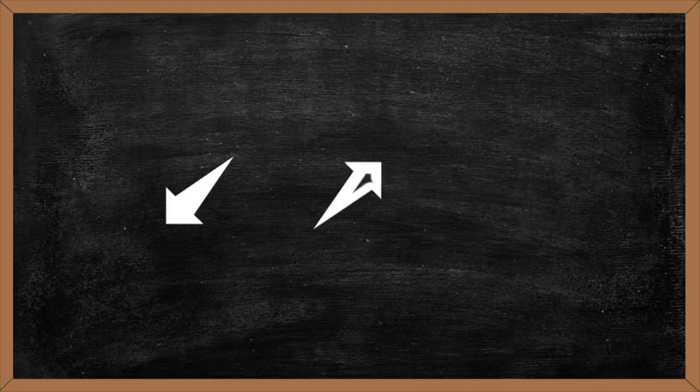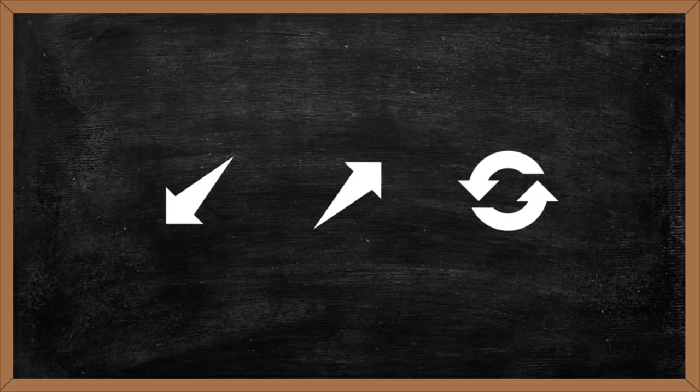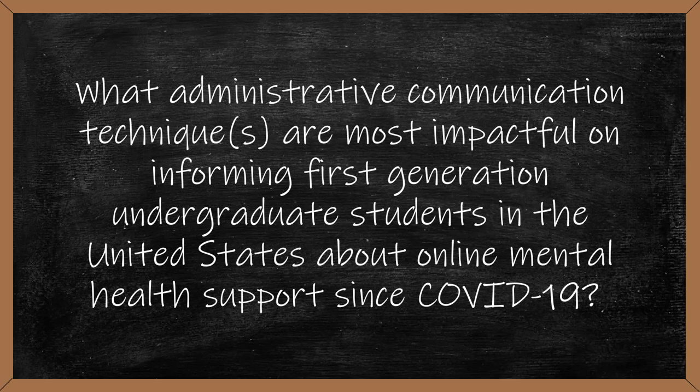So what does a mixed methods research study look like in practice? The quantitative portion might come before the qualitative, or vice versa. The two parts may also be done at the same time — it just depends on the research question. Consider this research question: What administrative communication techniques are most impactful on informing first-generation undergraduate students in the United States about online mental health support since COVID-19?